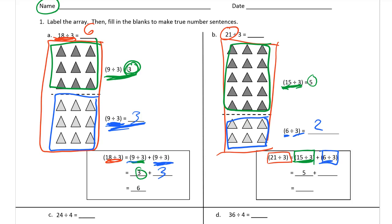The 6 divided by 3 gives us 2, and the 5 comes from that green section's quotient. Five plus two is seven, so 21 divided into rows of 3 gives you 7 rows.